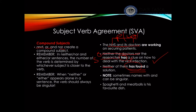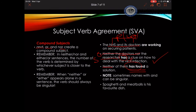Before I move on to the next slide, there is one note: sometimes nouns joined by 'and' would still be singular. For example, 'spaghetti and meatballs is his favorite dish.' These two are actually a title or a name for a dish. Hence they are singular.